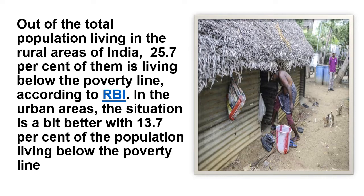RBI, meaning Reserve Bank of India, that is the Central Bank of India, reported that 25.7% of the rural population is living below the poverty line. The poverty line for the year 2011 was fixed at Rs. 816 per month for rural areas and Rs. 1,000 per month for urban areas. Those who are not earning this much for a month are considered poor. In urban areas, the situation is a bit better, with 13.7% of the population living below the poverty line.